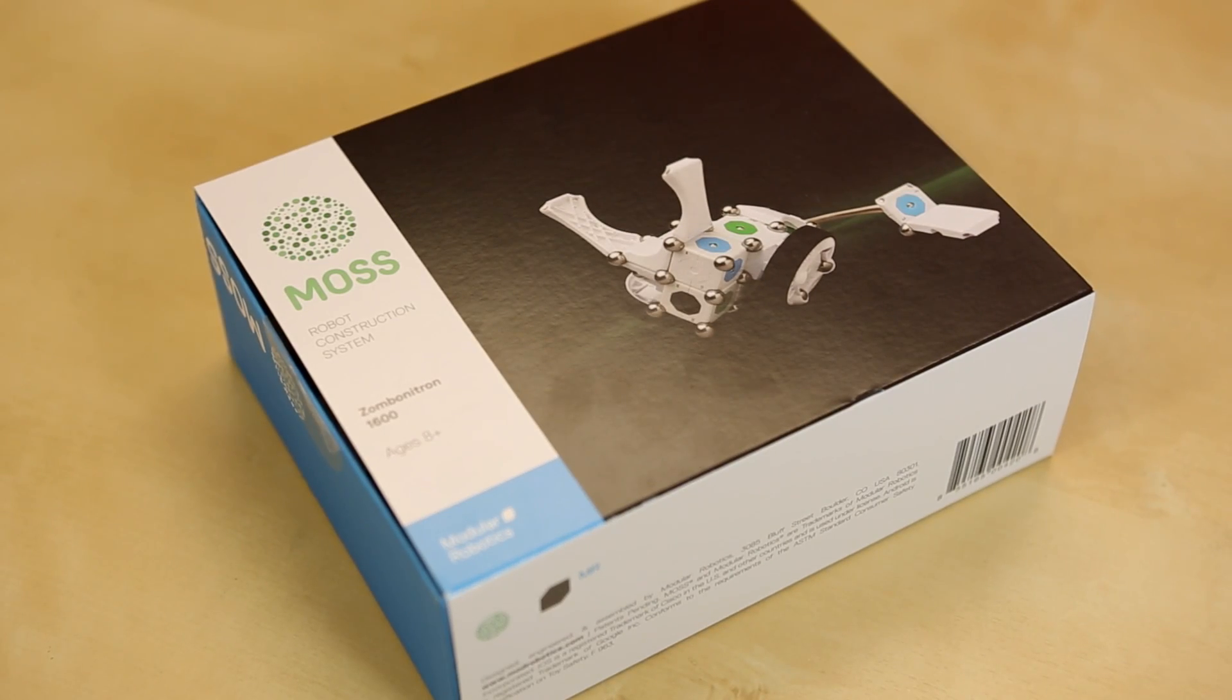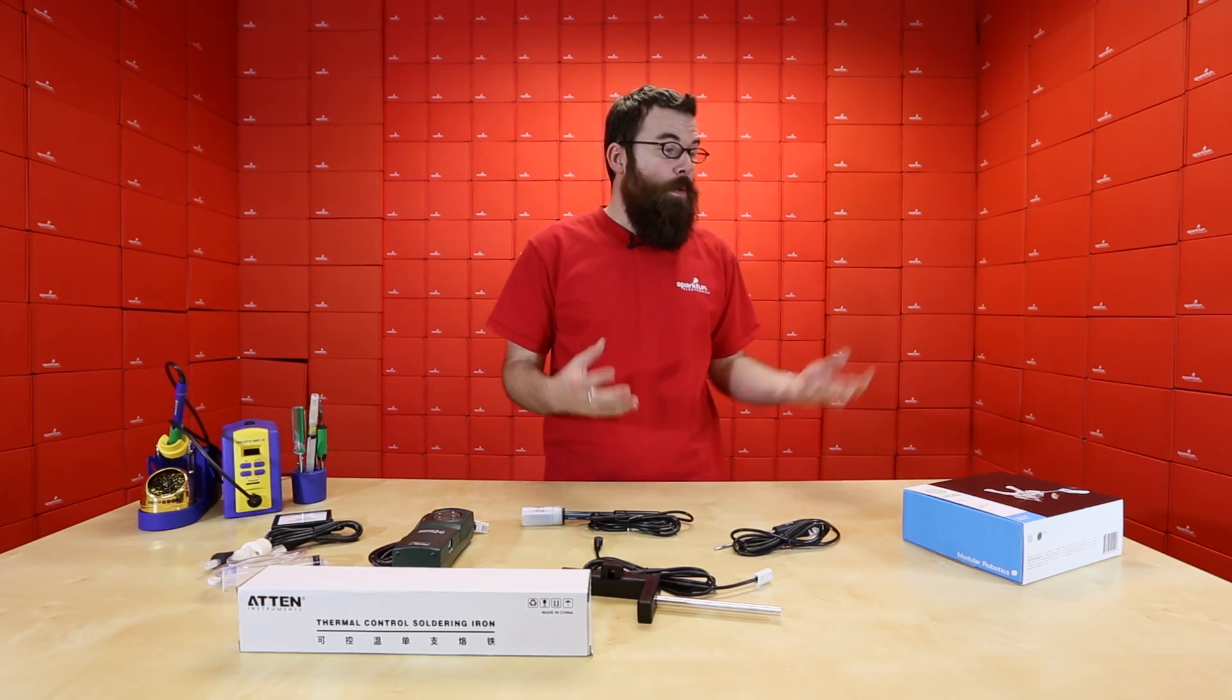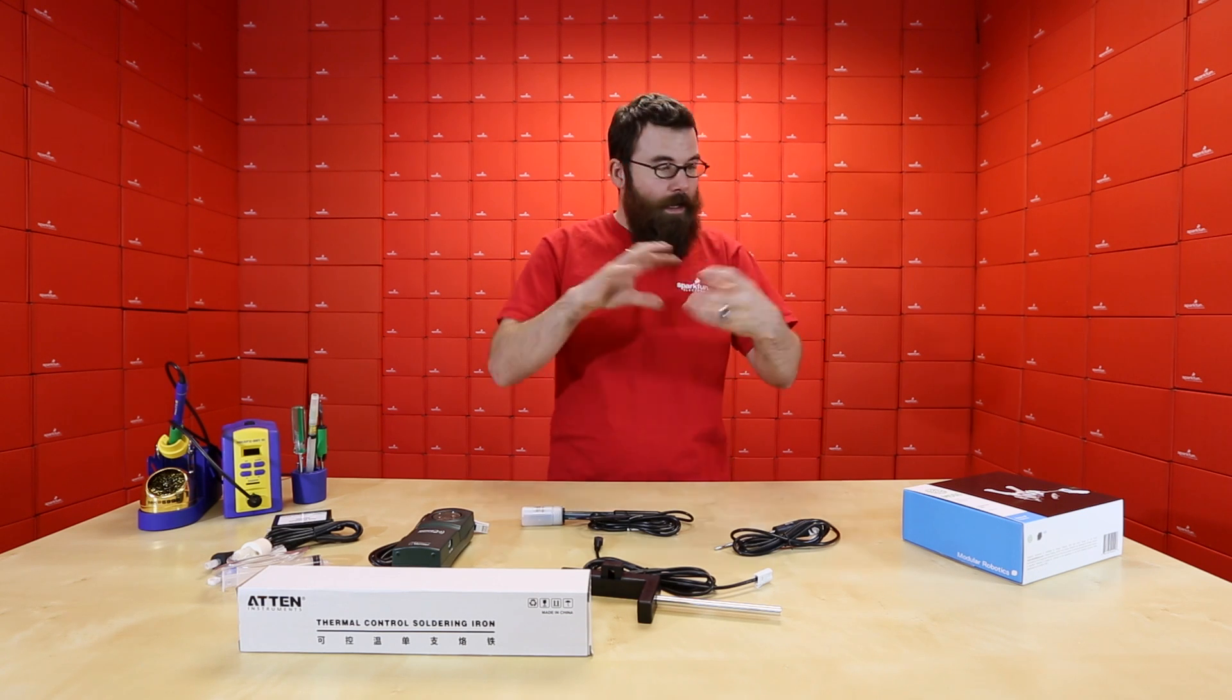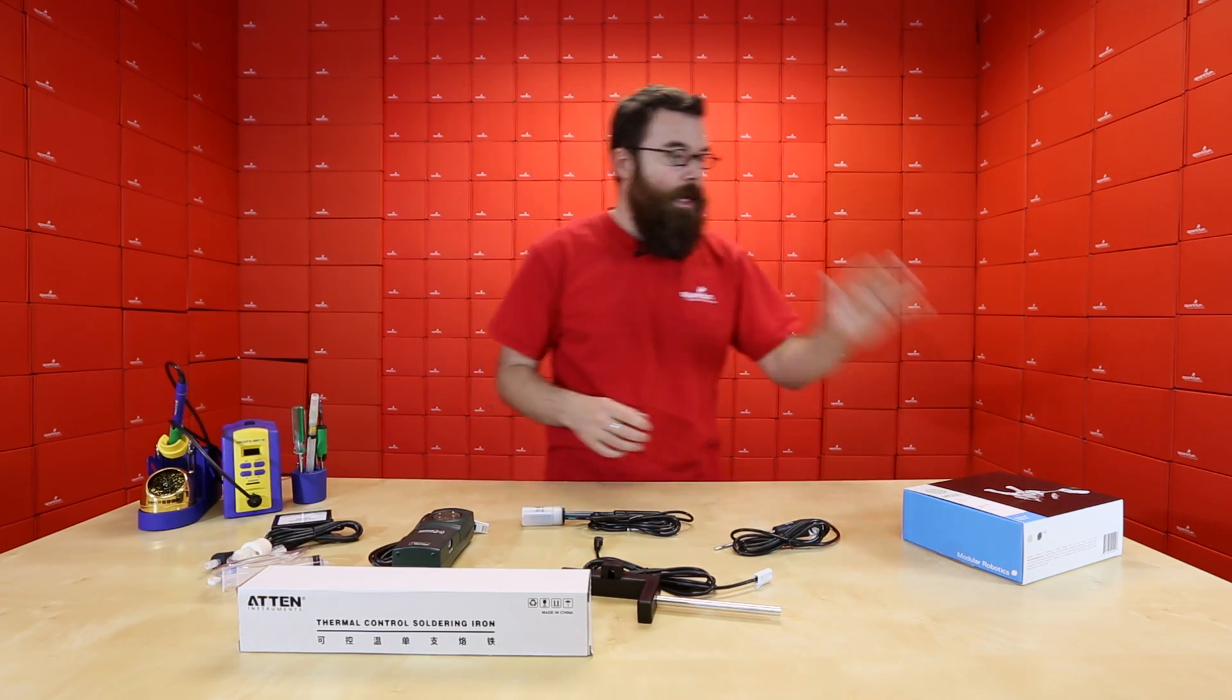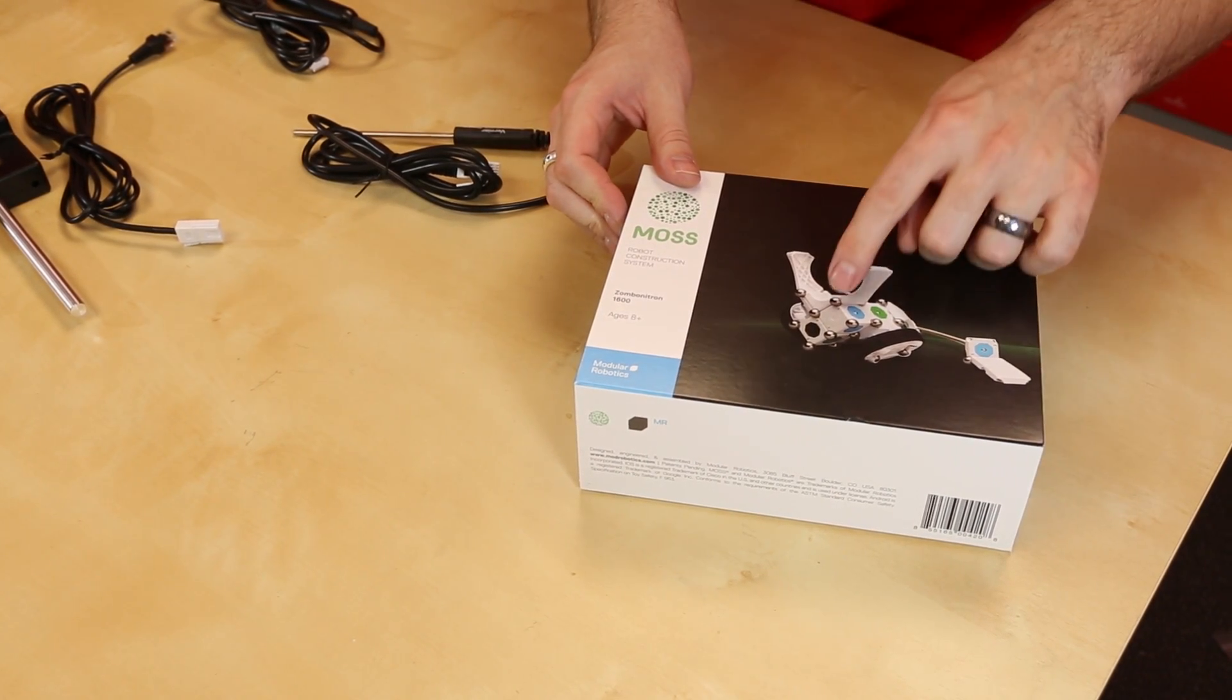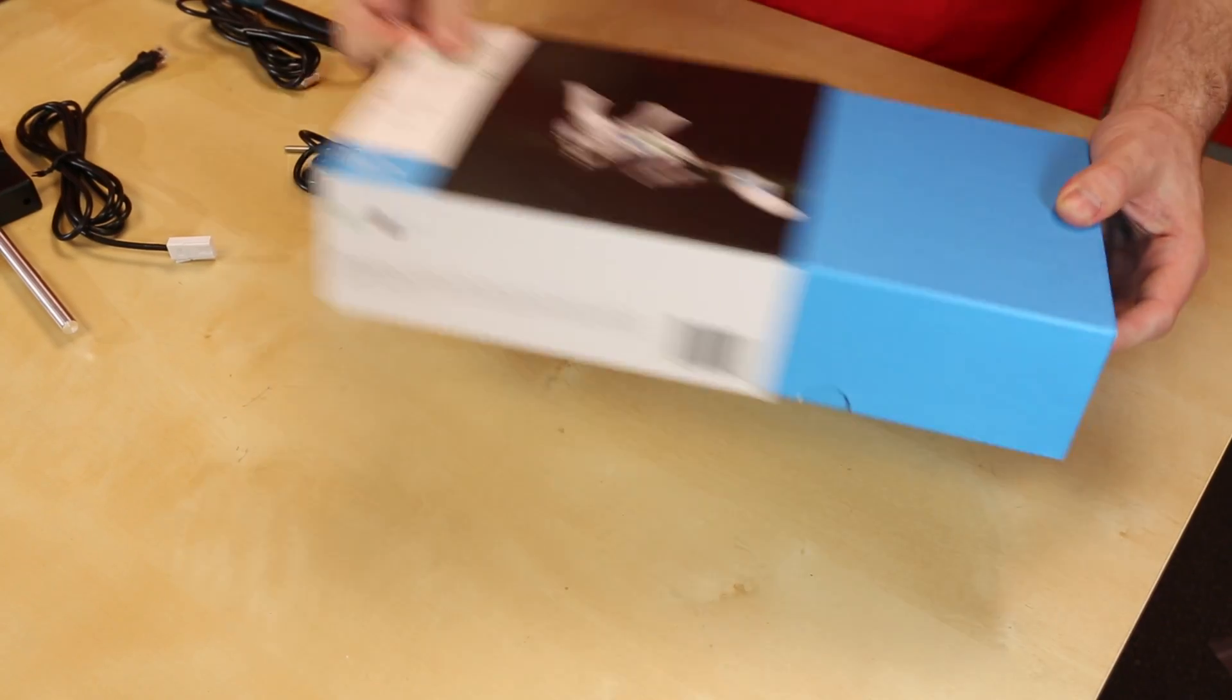First up, we've got a new product from Modular Robotics. This is the Moss. Modular Robotics is the company behind the Cubelets, which are modular robotic pieces that fit together and form these various little robot contraptions. The Moss is very similar, except for this actually uses these little metal balls to connect everything together. So let me show you what it looks like.